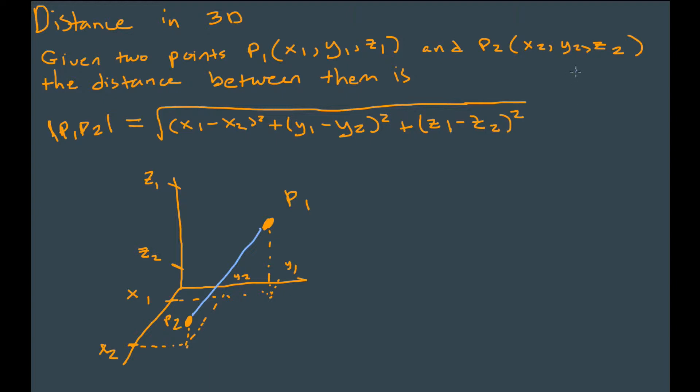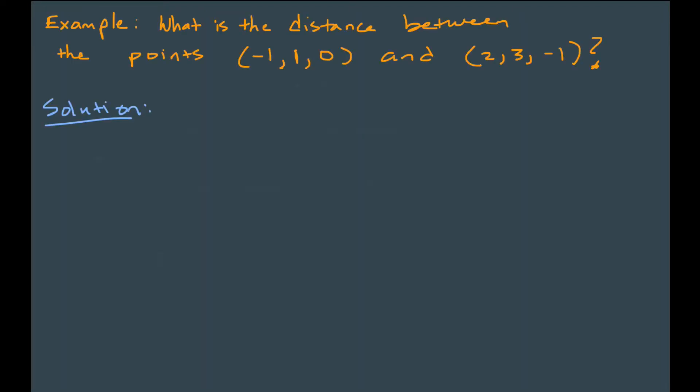So it does not matter which point we pick for P1 and P2. Let's look at an example. What is the distance between the points negative 1, 1, 0 and 2, 3, 1?